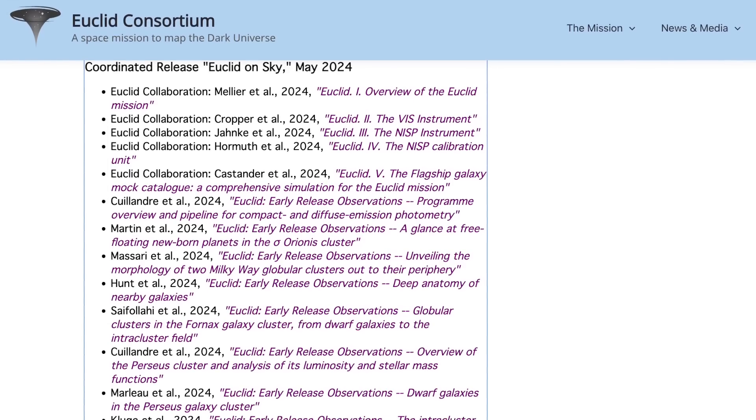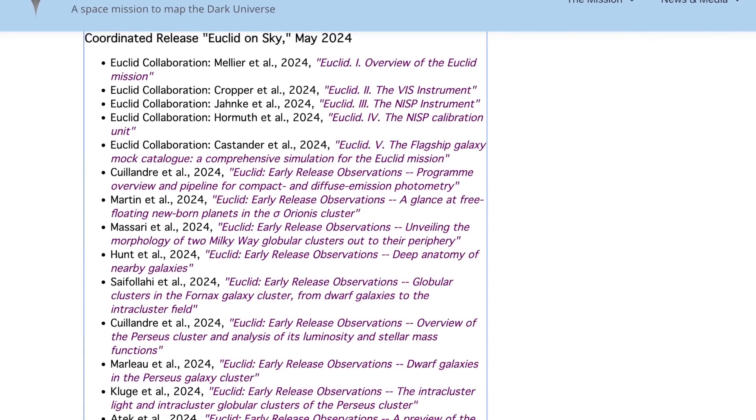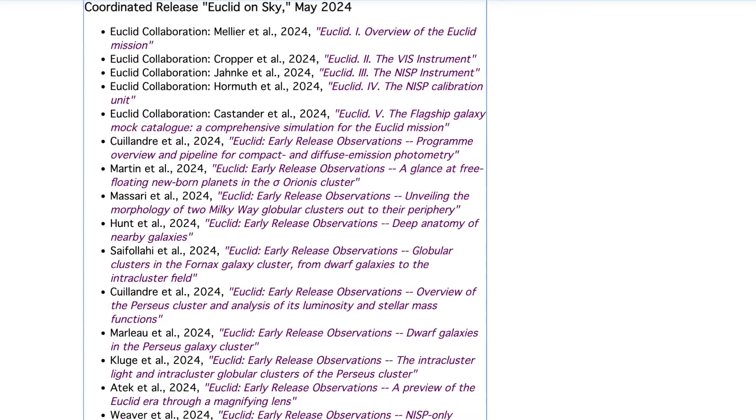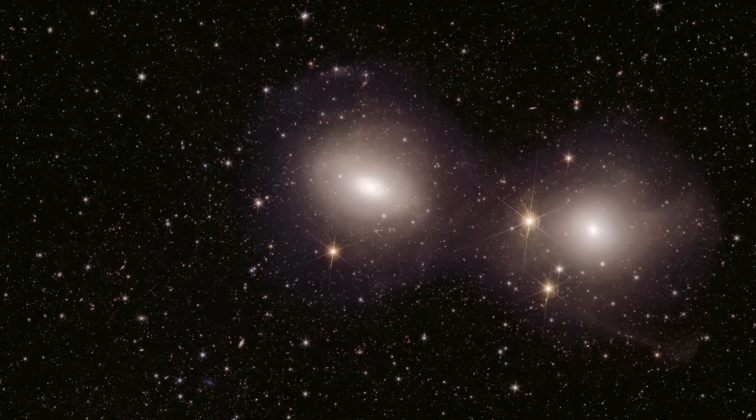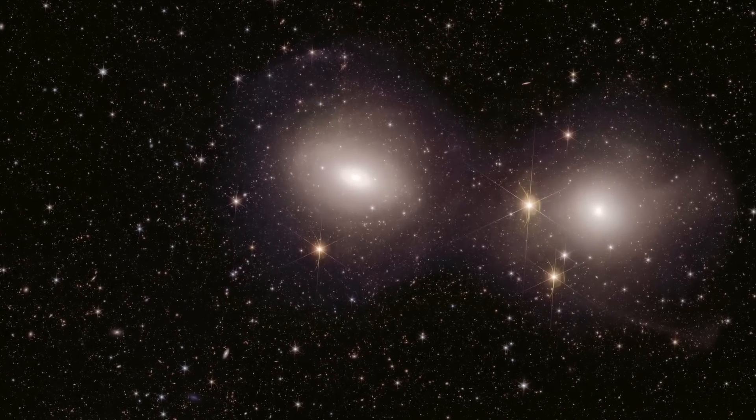The Euclid Consortium has just published the first early release observation science results. Five reference papers about the survey, the instruments and the simulations, and 10 science papers. And to accompany this, five new stunning images.